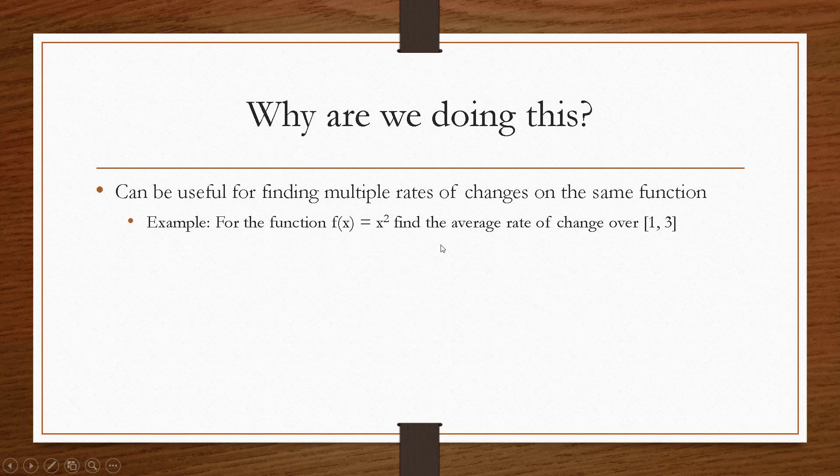So we already found what the difference quotient was for f of x equaling x squared. So let's find the average rate of change over the interval from x equals 1 to x equals 3. So recalling that our difference quotient told us the slope of the secant line was going to be 2x plus h. In our example, the lowest x value is 1, and the difference in the x values, what h is, is just going to be 3 minus 1, which is 2. So plugging that in, we get our slope is 2 times 1 plus 2 equals 4. So that was pretty quick.